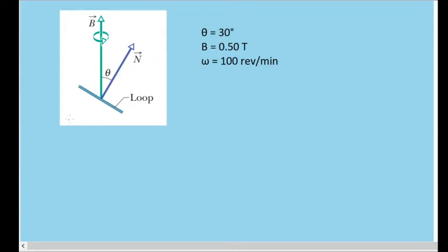In this problem, we have a circular conducting loop. It looks like a straight line because we're looking at it from the side. This n vector here is the vector normal to the loop.